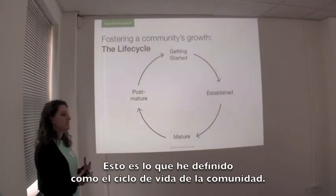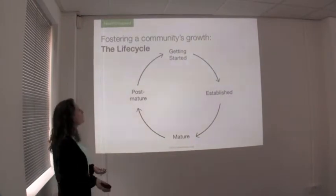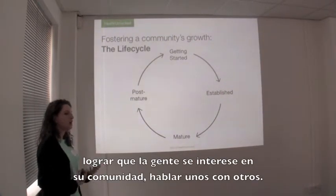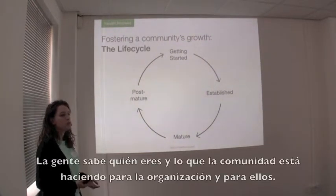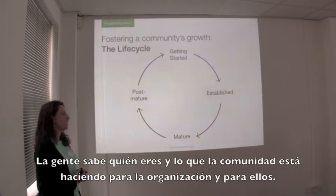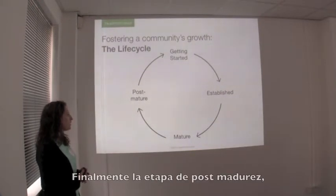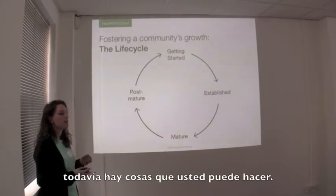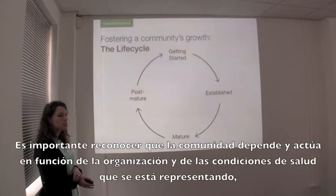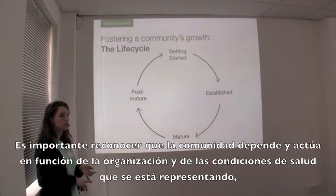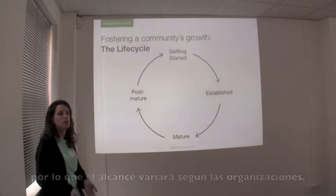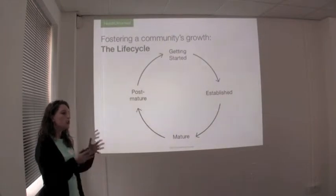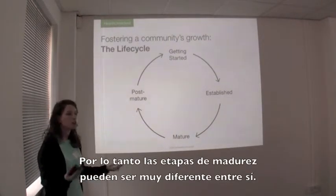This is what I've developed as the community life cycle. I consider it to be pretty much four stages. The first stage is getting started — starting from the ground, getting people interested and talking to each other. The next stage is when you become more established. Then you get into the mature stage, and then there's the post-mature stage. It's also important to acknowledge that depending on your charity and the conditions you're representing, your reach is very different. The BLF can reach millions of people, while a rare condition community can't — so your mature stage could look quite different.